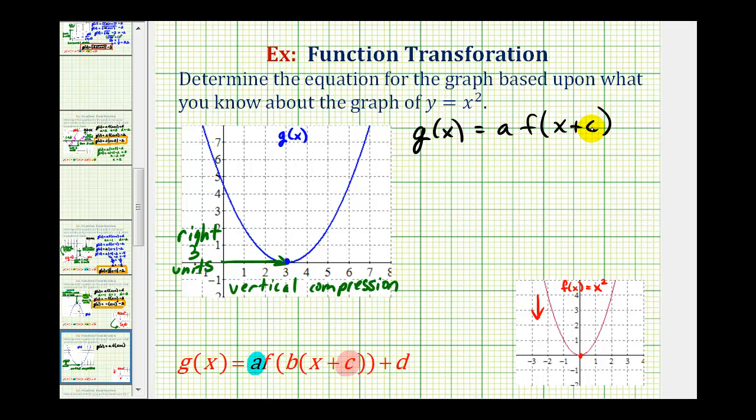The value of c determines whether we have a shift left or right. If c is positive, the graph is shifted left, and if c is negative, the graph is shifted right. So the sign of c is actually the opposite sign that we might think. Because our graph is shifted right three units, or in the positive direction along the x-axis, c is actually negative three.